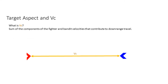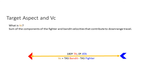We take the fighter's velocity and the bandit's velocity. In this case, target aspect and ATA are both zero, and those two velocities added together give you the closure rate. If you're in pursuit of the bandit and they're moving away from you, you would subtract their speed from your speed to get the closure rate.